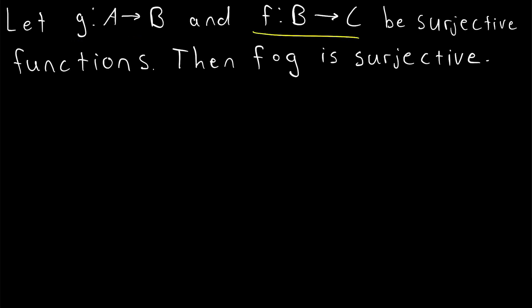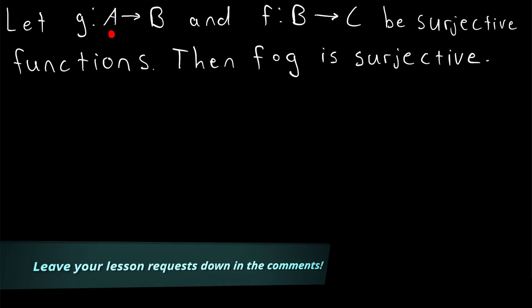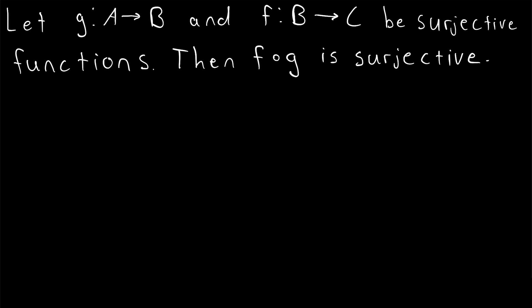Let G and F be surjective functions where G maps elements from A to elements in B and F takes elements from that same set B and sends them to the set C. So these are two surjective functions. In today's Wrath of Math lesson, we're going to prove that their composition F of G is also surjective.